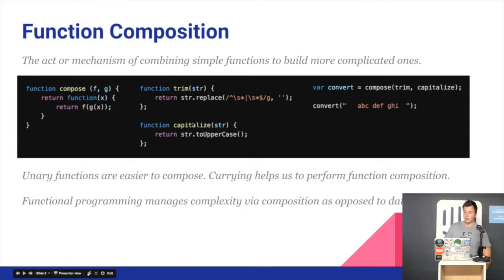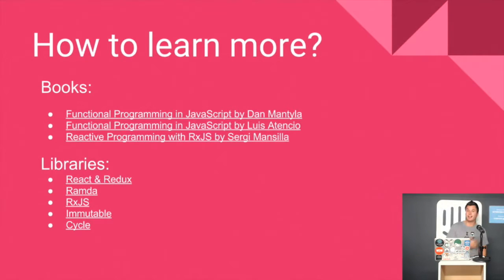What we can do is, for example, here we have trim and capitalize and I can compose those two functions into convert. And when I call it with this string, it will trim it and it will capitalize the first letter. So again, it allows me to create more functions from previous functions. And that's basically the core things that you need to know about functional programming.